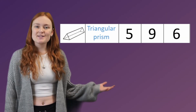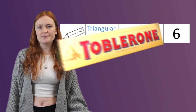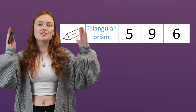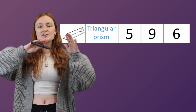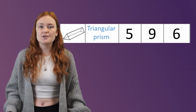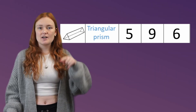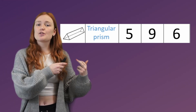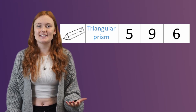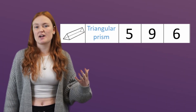Next is a triangular prism — that's a bit like a Toblerone box. It has 5 faces: the 2 triangles either side and then 3 rectangles that join them up. It then has 9 edges: 3 on each triangle and then 3 that join them together. And then it has 6 vertices — 6 corners, just the ones that make up the triangles.